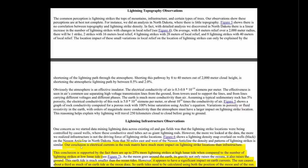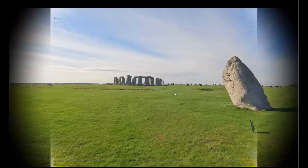All right, continuing with this research paper, allow me to quote here. Their conclusion is electrical currents in the rock matrix have much more impact on lightning strike locations than infrastructure. This conclusion is supported by the fact that there are 25% more lightning strikes at high lunar tide when compared to the number of lightning strikes at low lunar tide. As the moon goes around the earth, its gravity not only raises the oceans, it also raises the ground. This earth tide is much smaller than the ocean tides. However, it appears to have a significant impact on earth currents. The sun causes about a third as much of an earth tide as the moon does. So the earth tides need to be calculated using both the position of the moon and of the sun.